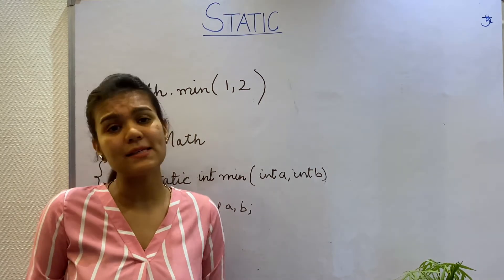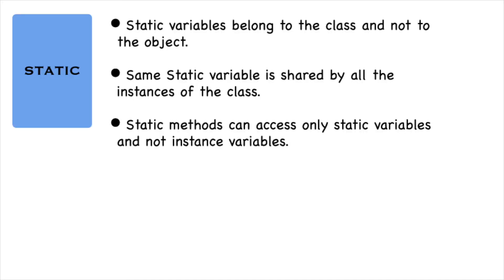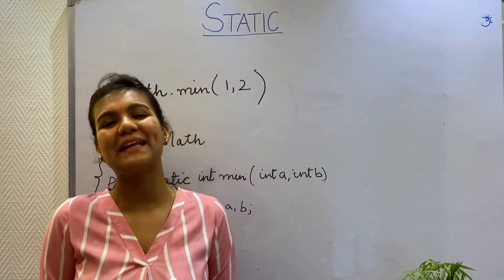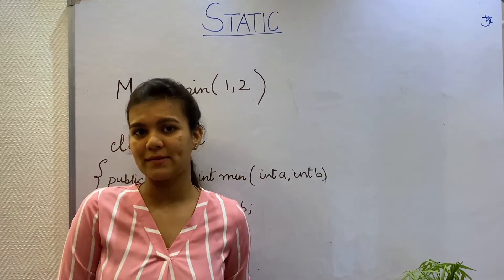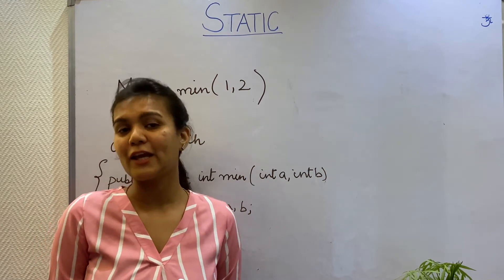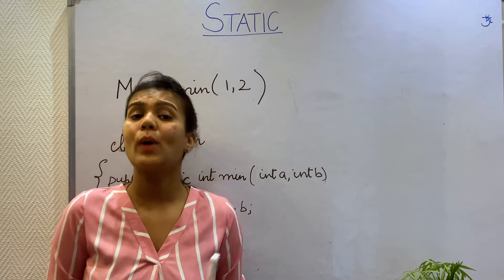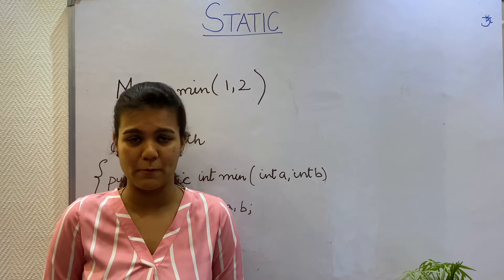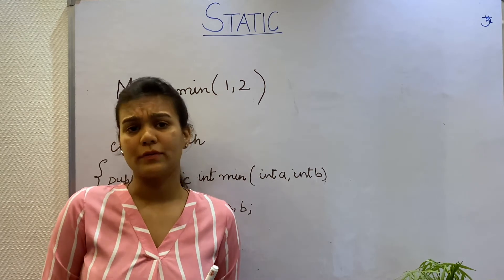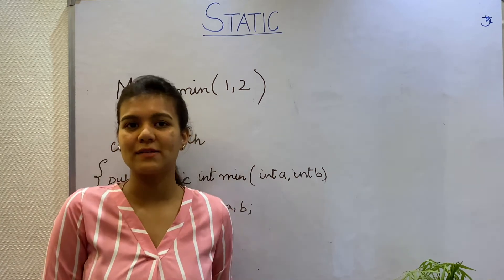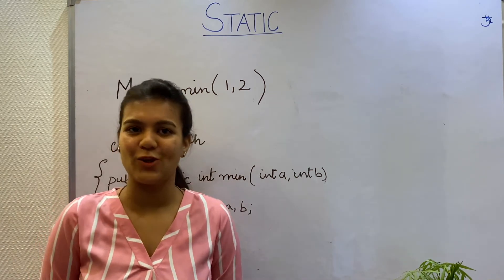Hence static methods cannot access instance variables. Secondly, static methods can call other static methods and not the non-static methods. Static methods are not dependent on the instance variables and cannot call instance variables. While the non-static methods are the methods that are dependent on the instance variables, so the static methods will not be able to access these non-static methods. This brings us to the end of the static keyword.